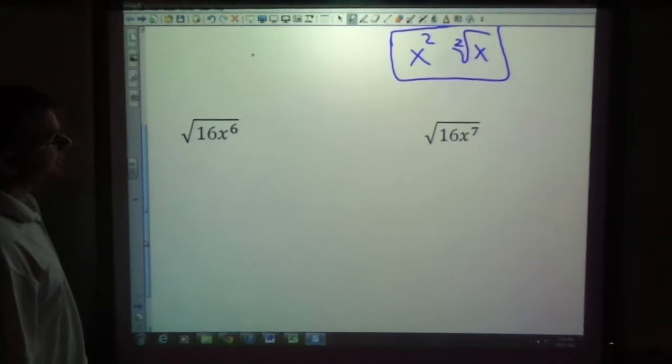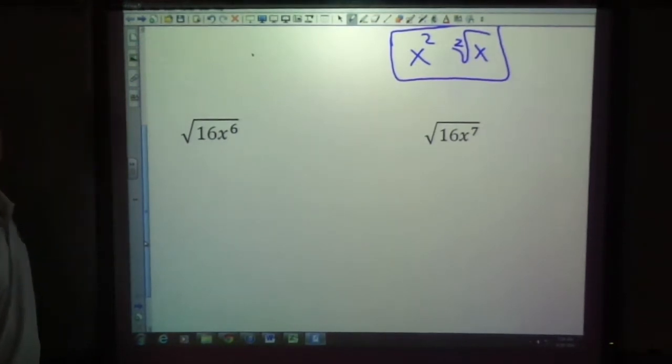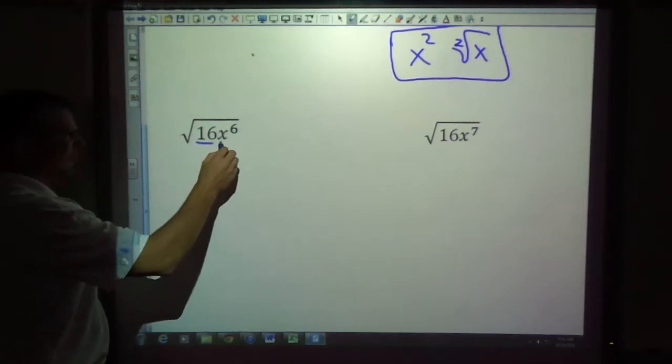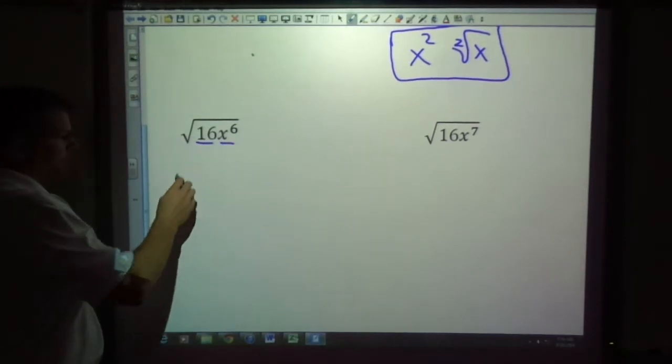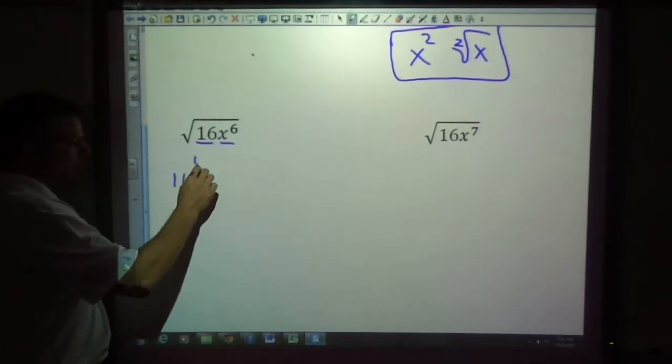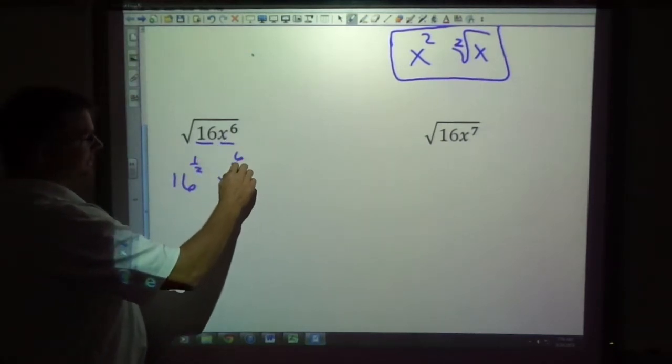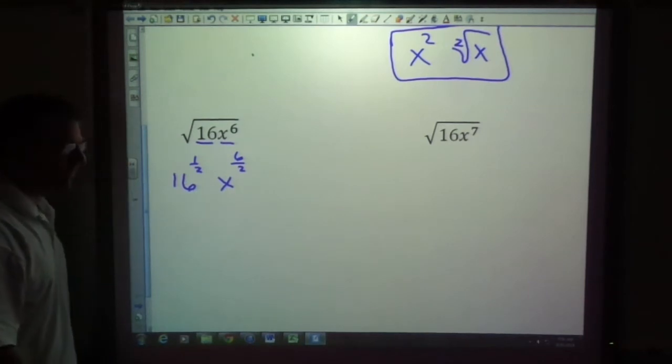16x to the sixth. If the directions were to simplify using radicals, very easy, we would take this and that separately. So the first one is 16 to the one half power. And the second part is x to the six halves power. But we're not quite done.